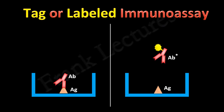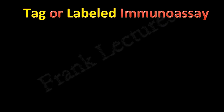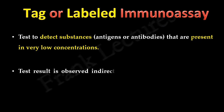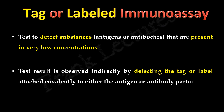Again, this is a microtiter well containing the same immobilized antigen, and this is the specific antibody to this antigen. But this time, this antibody is tagged or labeled. When we add this tagged or labeled antibody to the microtiter well, the antibody will bind its specific antigen as usual. But this time we can confirm the binding by detecting the tag or label. So, a tagged or labeled immunoassay is a test to detect substances present in very low concentrations. The test result is observed indirectly — by detecting the tag or label bound to either the antigen or antibody partner.